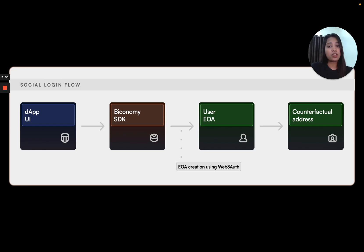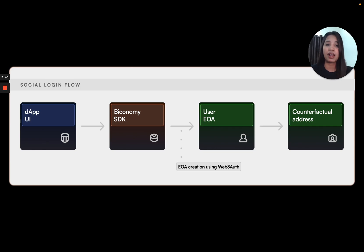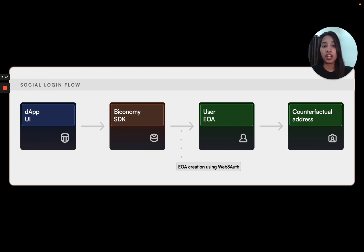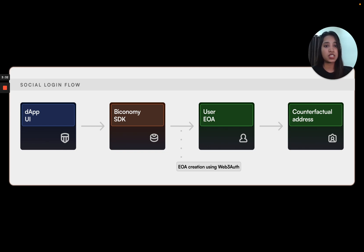The user is always in control of ownership and access to their cryptographic key pair. As you can see in this flow, users can log into the dApp either via social login or by connecting their external wallet like MetaMask. In social login, they may sign in via Google, Facebook, or email. A unique private key is generated for each user via Web3Auth. Using this key, users can sign transactions without any wallet popups or context switching.